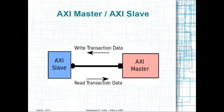For AXI interfaces the story is the same. Suppose you have two modules: one will be an AXI master — the one initiating and generating the transactions — and another will be an AXI slave, which receives and responds to the transactions. For example, an AXI master can be a CPU, and an AXI slave can be a block of memory. The CPU initiates read and write transactions to the memory, and the memory responds to these transactions.